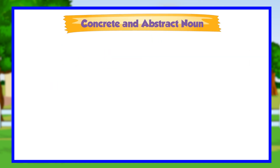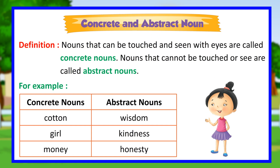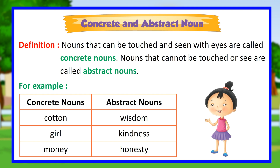Concrete and abstract noun. Definition: nouns that can be touched and seen with eyes are called concrete nouns. Nouns that cannot be touched or seen are called abstract nouns. For example, concrete nouns: cotton, girl, money. Abstract nouns: wisdom, kindness, honesty.